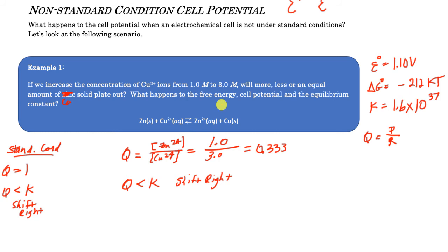What's going to happen to free energy? Because I'm further away from equilibrium, I'm going to get more free energy out of the system as well as more voltage. So my free energy will become more negative and my cell potential will be a higher voltage. K is going to remain constant because I did not change temperature — if I change temperature, then K changes, but otherwise the equilibrium constant remains the same.